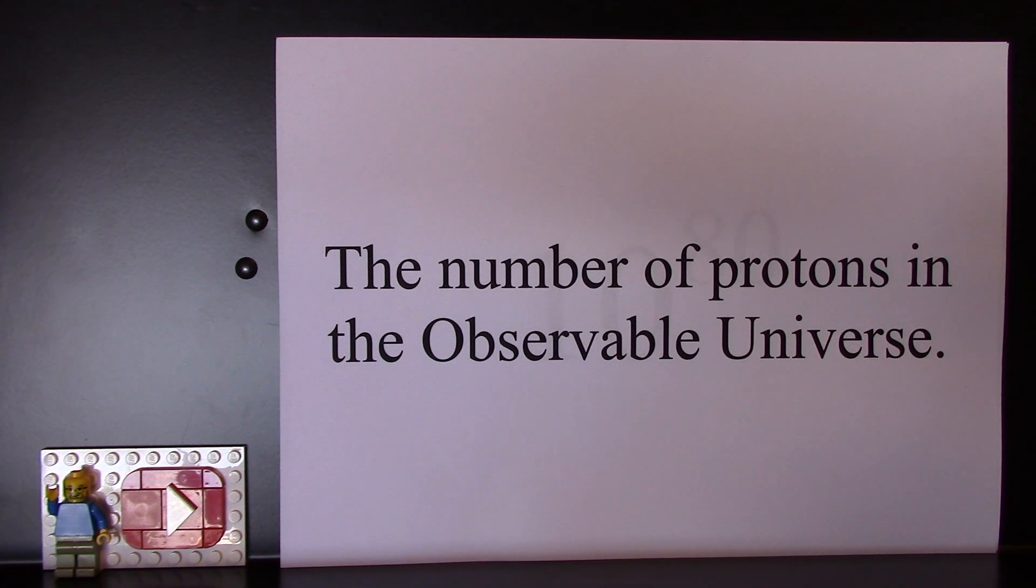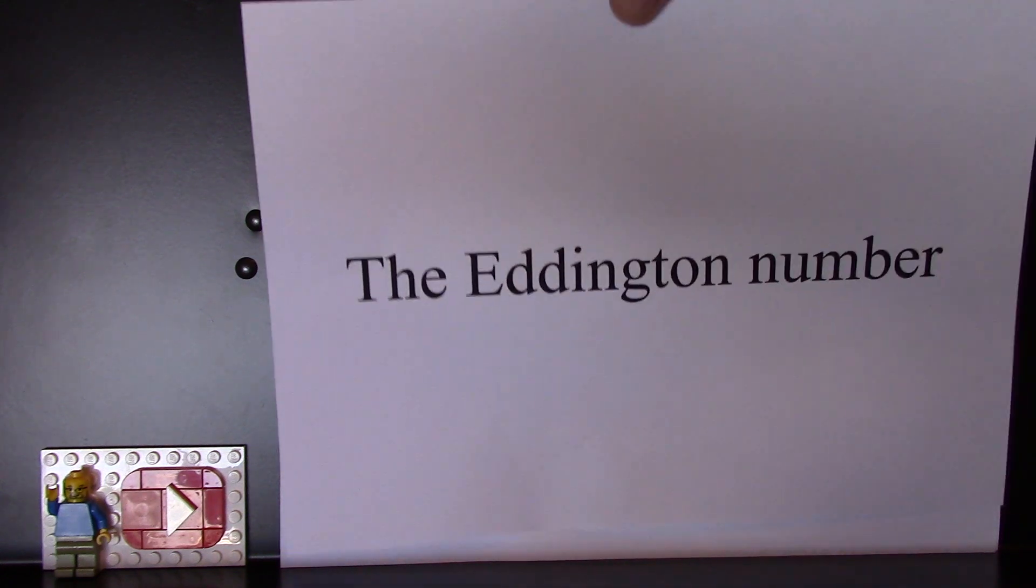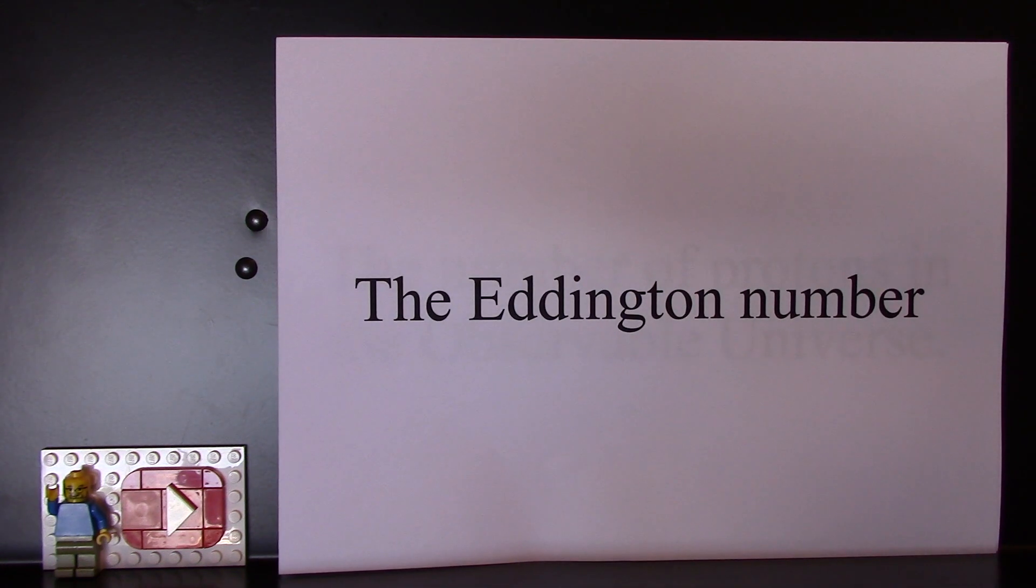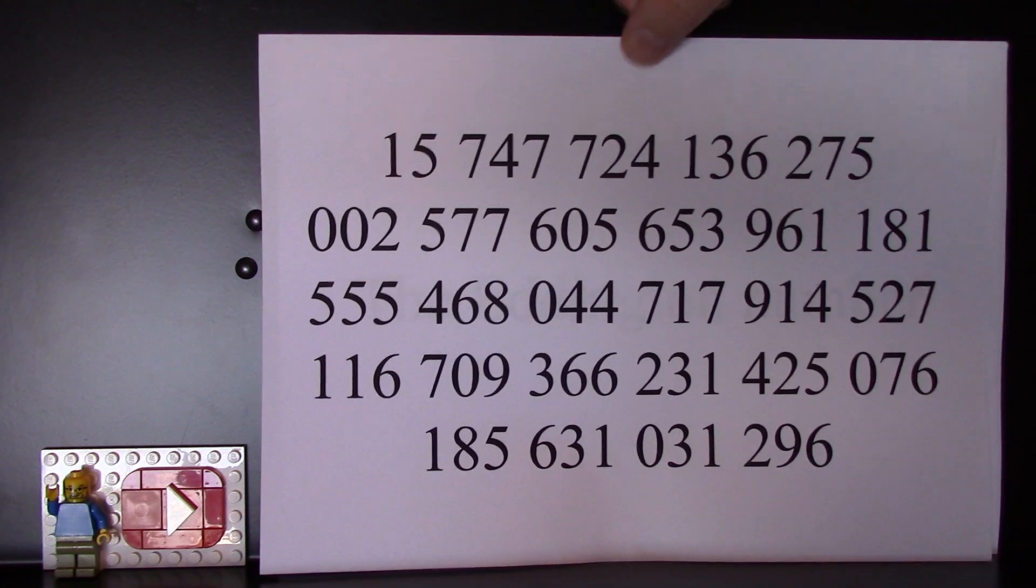And I was a little sad at first that it was only an order of magnitude and not a number. But I did my research and found that it has a name. It's called the Eddington number, and it has, or at least in 1938, it had an exact number value.